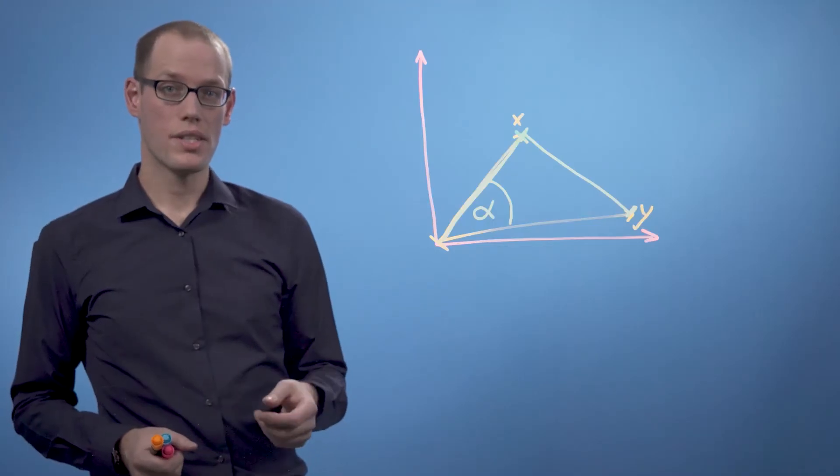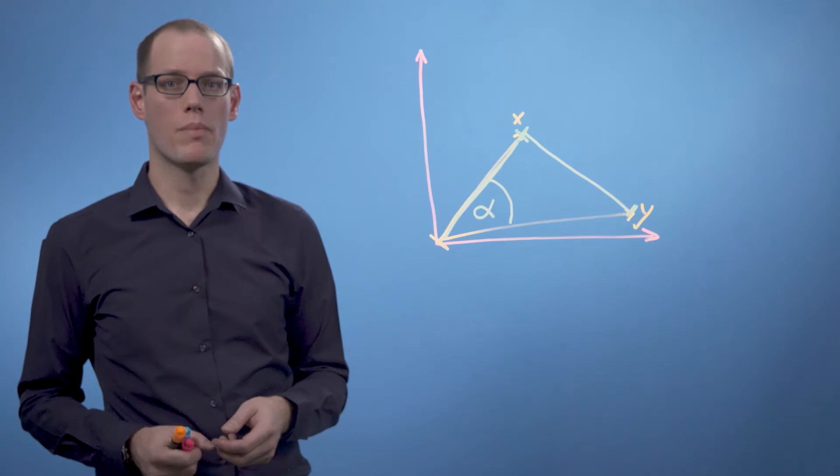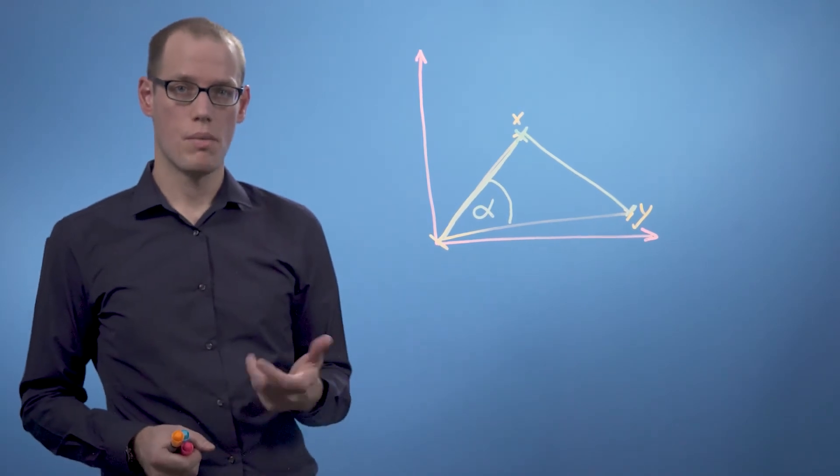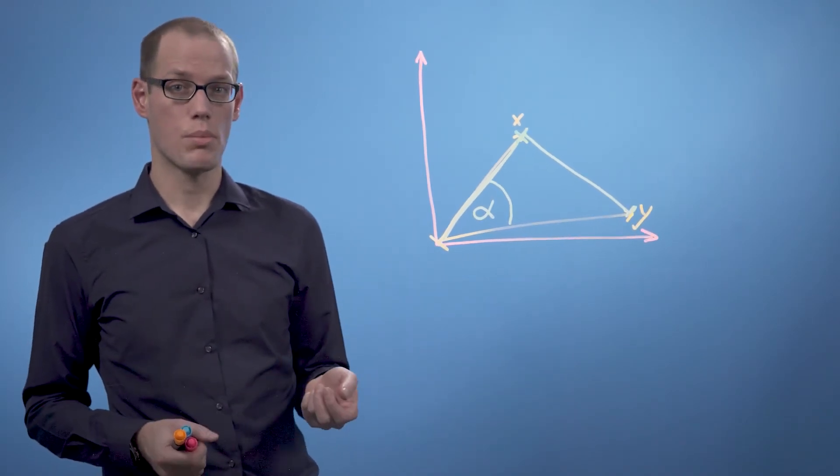In order to measure angles and compute lengths and distances, we need to equip the vector space with an inner product, which allows us to talk about geometric properties in this vector space.